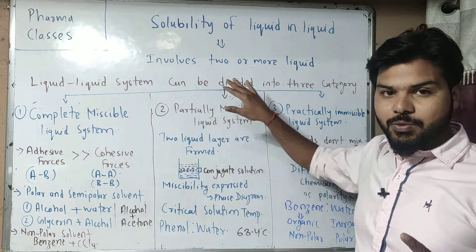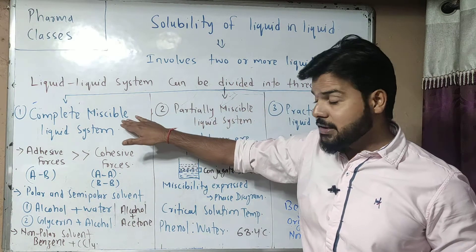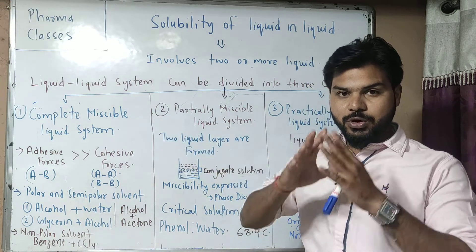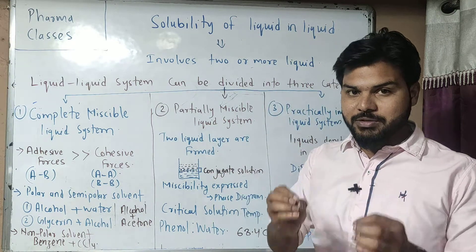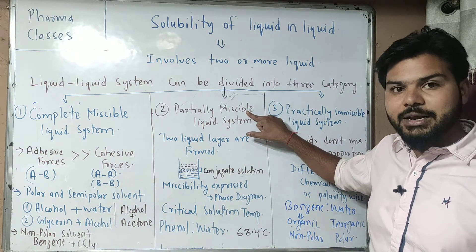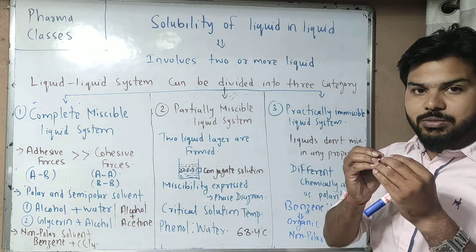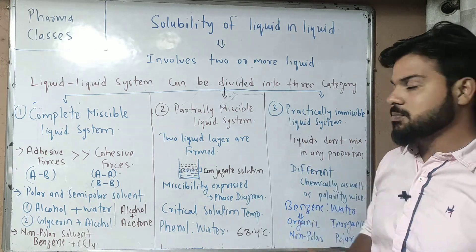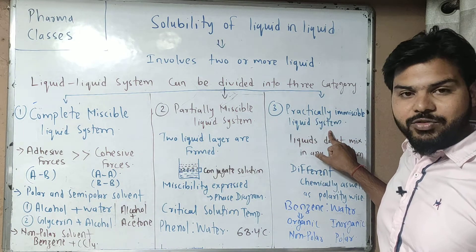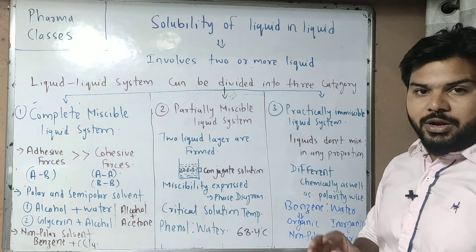We can divide the liquid and liquid system into three parts. First, completely miscible liquid system. Second, partially miscible liquid, which is not completely but in a small quantity is miscible. Third, practically immiscible liquid system, where the liquids are not miscible at all.